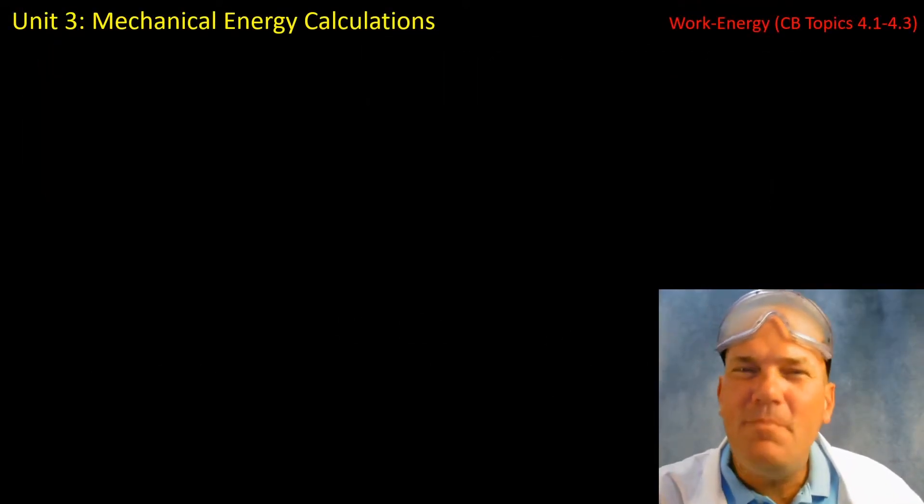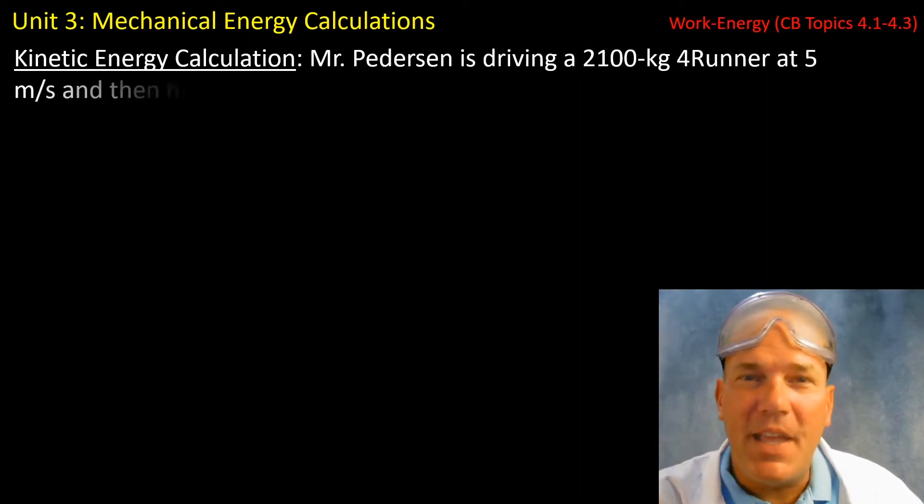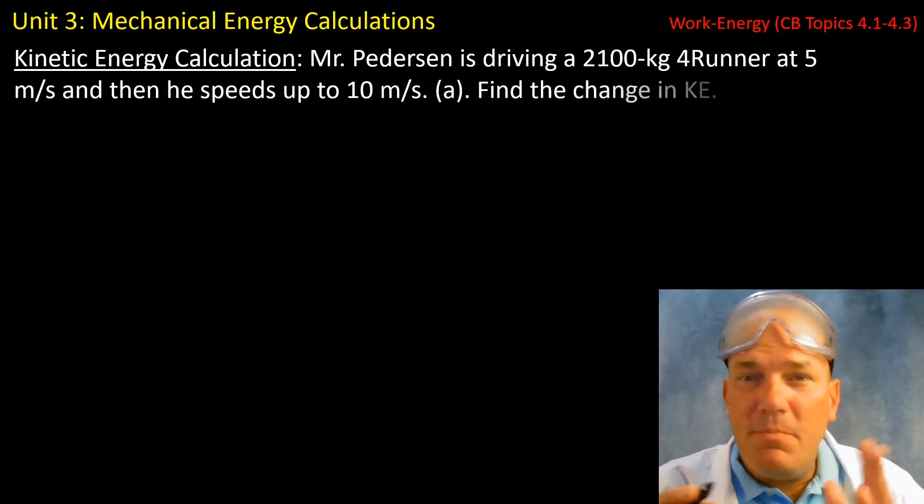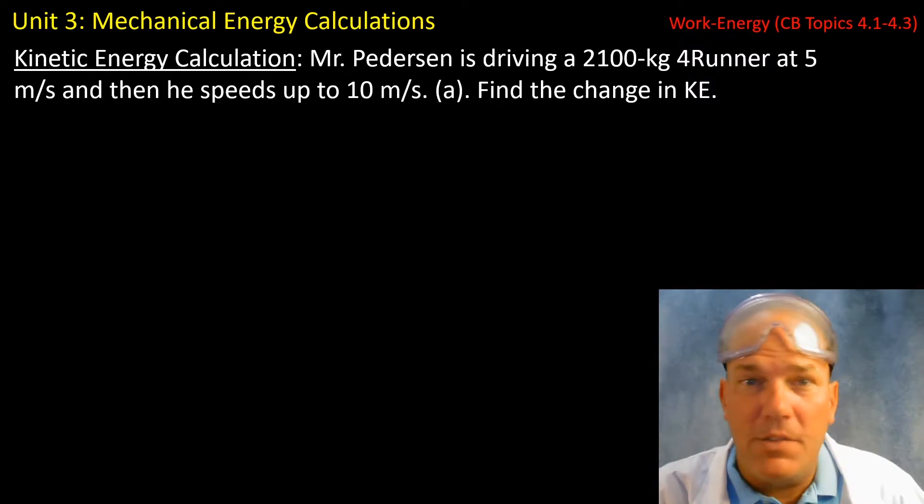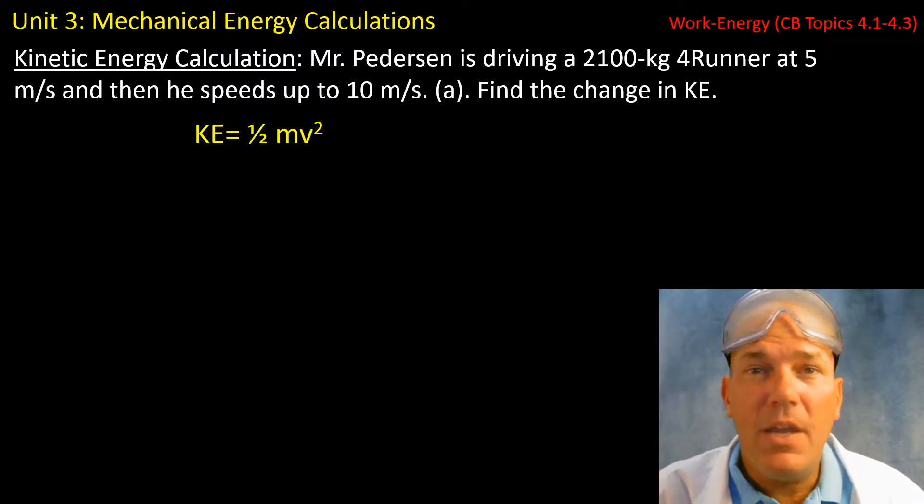Let's go ahead and do three mechanical energy calculations. The first one, which deals with kinetic energy, has me driving in the 4Runner, which has a mass of 2100 kilograms, initially going 5 meters per second. I then speed up to 10 meters per second, and you're asked to find the change in kinetic energy.